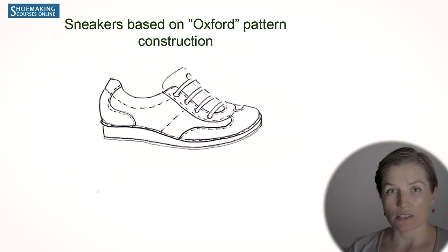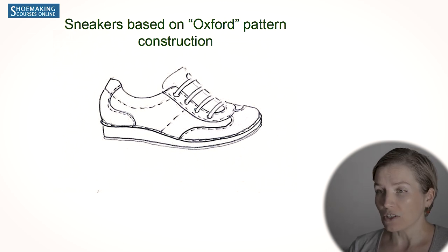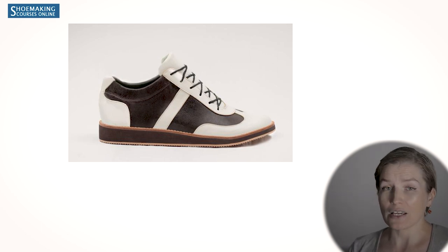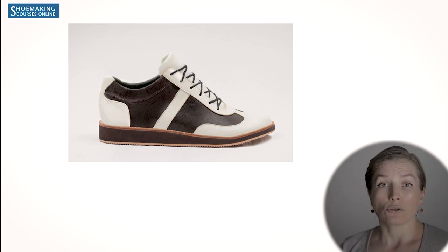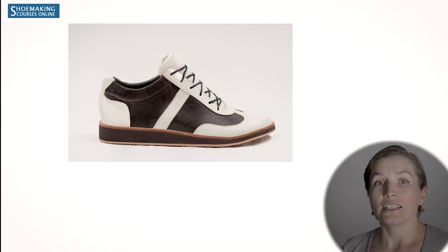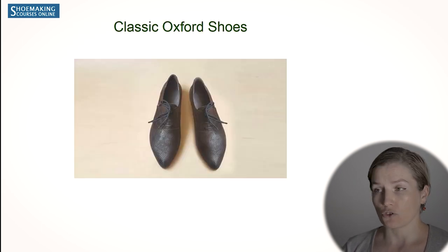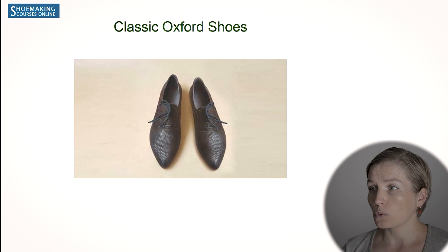The first type of sneakers are sneakers based on Oxford construction. These are sneakers that we made in my sneakers course. But there are many different possibilities that you can do working with sneakers. To understand better why this sneaker type is based on the construction of Oxford shoes, let's talk a little bit about Oxford shoes, which we made in my course. Here we have quarters that are sewn to the vamp part.